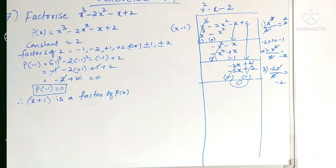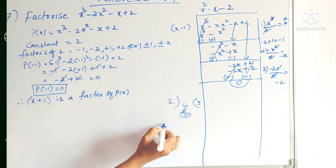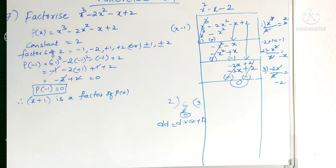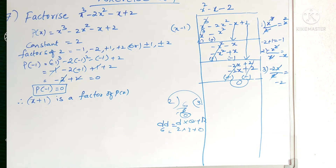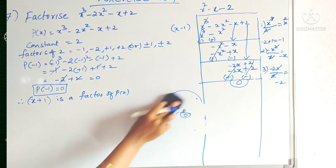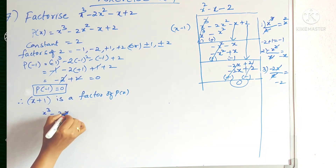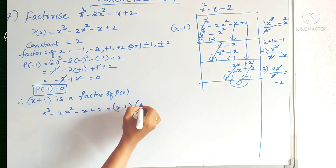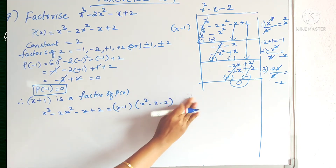Now, after dividing — if you divide 6 by 2, 2 threes are 6 and the remainder is 0. This 6 is called the dividend, 2 is the divisor, 3 is the quotient, and 0 is the remainder. So 6 equals 2 into 3 plus 0. That is called the division algorithm: dividend equals divisor into quotient plus remainder. So we can write: the dividend x cube minus 2x square minus x plus 2 equals divisor (x plus 1) into quotient (x square minus x minus 2) plus remainder 0.